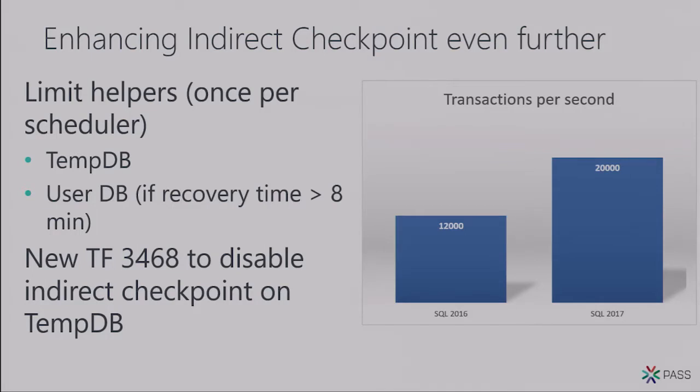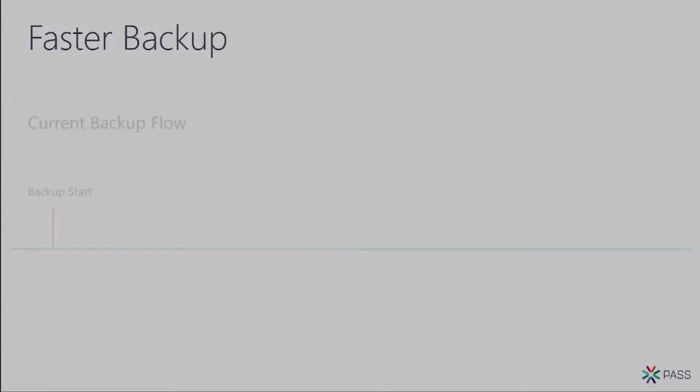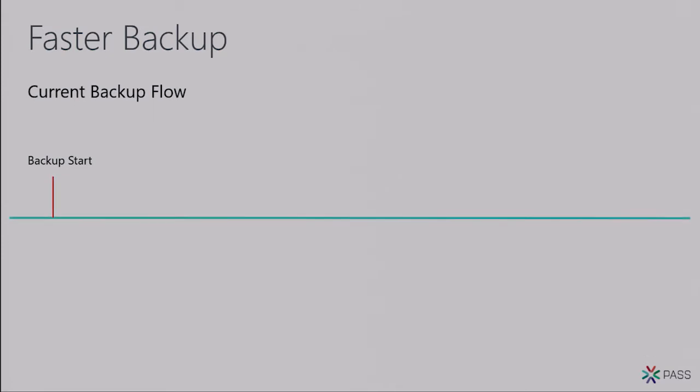Now let's see how the indirect checkpoint algorithm was used to make backups faster in 2017. During a full database backup, at some point after clearing the differential bitmap — which is maintained for differential backups — there are several steps involved. The differential bitmap tracks which pages have changed since the last full backup.